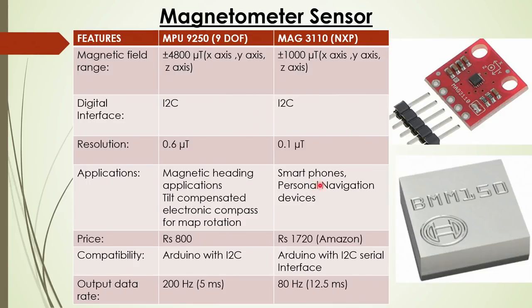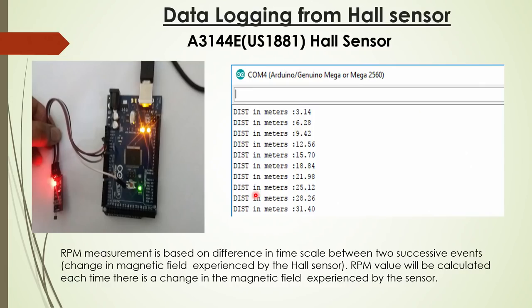The MAG3110 is integrated in smartphones and personal navigation devices. The MPU9250 is for magnetic heading applications, tilt compensation, and electronic compass for map rotation. We looked at both and tried to see which one would be most suitable.